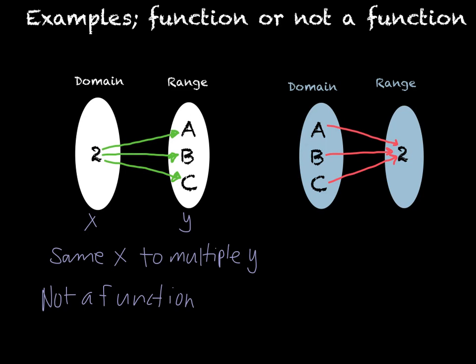Okay, now in the other one, our domain is a, b, and c. And our range, so those are our x values. And our range, our y values, is 2. So basically we just switch them around. However, in this one, our x values, the a is going to 2, the b is going to 2, the c is going to 2. So every x value is going to the same y value, but there's not one x value going to multiple y values. So this one is a function.